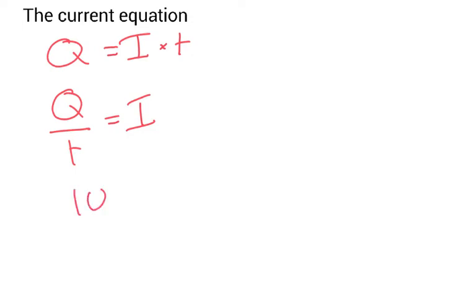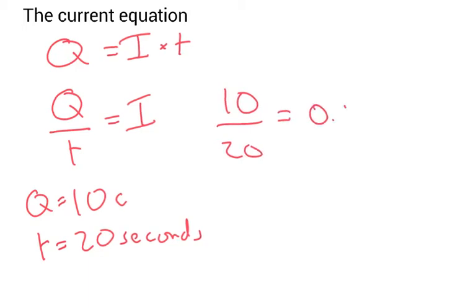The current equation: charge equals current times time. So if I want to find out how much current is flowing, I'll do the charge divided by the time. For example, if I had 10 coulombs and a time of 20 seconds, what would be the current? I'll do 10 divided by 20, which would be 0.5 amps.